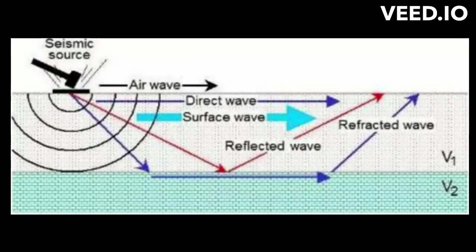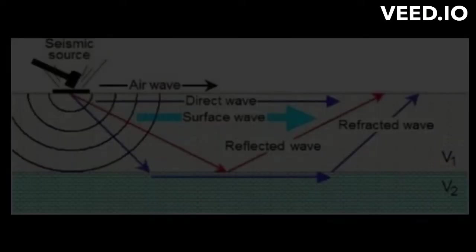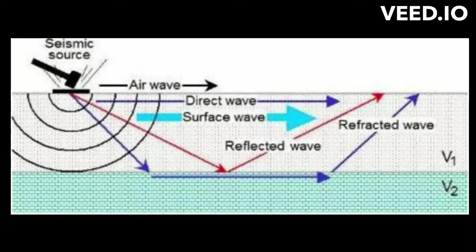At the critical angle for each interface, the energy is refracted 90 degrees. The seismic wave will travel along the interface with the velocity of the underlying layer. Since primary waves are the fastest portion of the seismic wave, they represent the first arriving energy at each geophone, either direct or refracted.